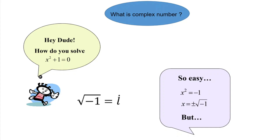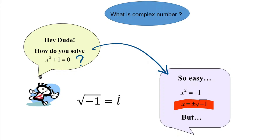What is a complex number? How do you solve x² + 1 = 0? You get x equal to plus or minus square root of negative 1. But when we use a calculator and key in square root of negative 1, we get a math error. Why? It is because square root of negative 1 is not a real number — it is a complex number, written as i.